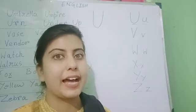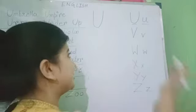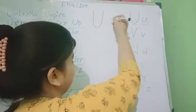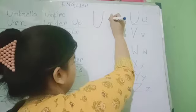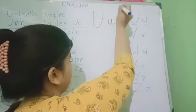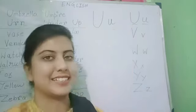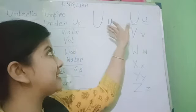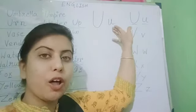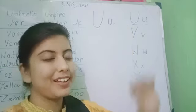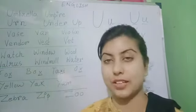And how to write small u? Just like the capital U, the small u looks like this but smaller and it has a tail with it. This is capital U and this is small u. Now, we will learn some words with U.